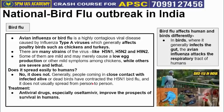Bird flu, also known as Avian Influenza, is a Type A virus that generally affects poultry birds like chickens. It has different strains — for example H5N1, H5N2, H9N2. Some strains are mild and only slightly reduce the egg-laying capacity of birds, while some strains can be fatal and can cause the death of birds.